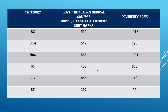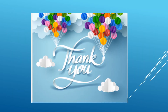SC community rank was 675. SCA category cutoff mark was 386, with a corresponding community rank of 118. For ST category, cutoff mark was 357 and corresponding community rank was 42, as listed in the sheet.